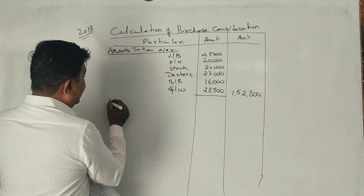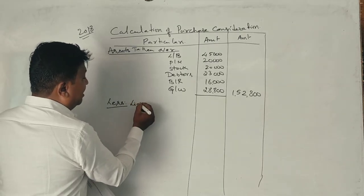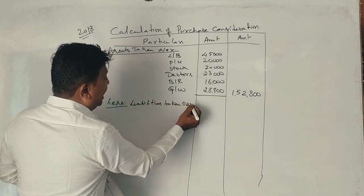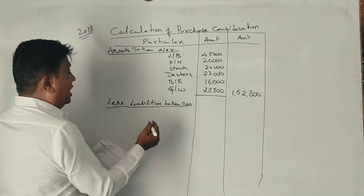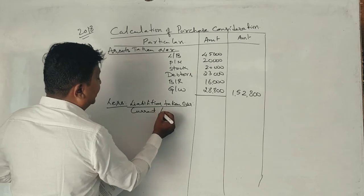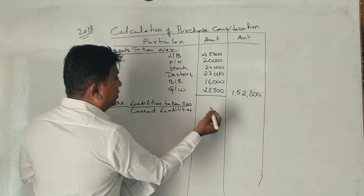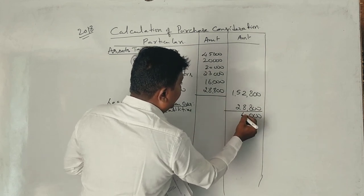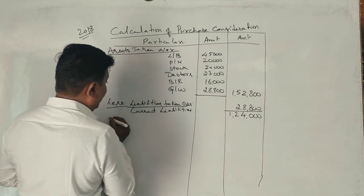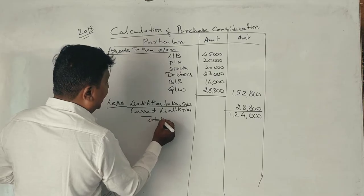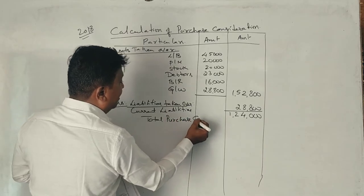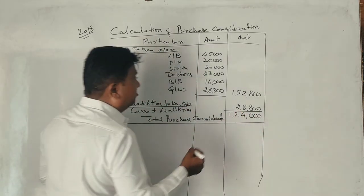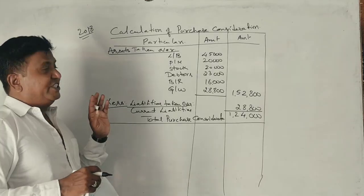There are liabilities to be taken over. Current liabilities 28,800. What do you get? 1,24,000. What do you get? Total purchase consideration 1,24,000. Purchase consideration is 1,24,000.